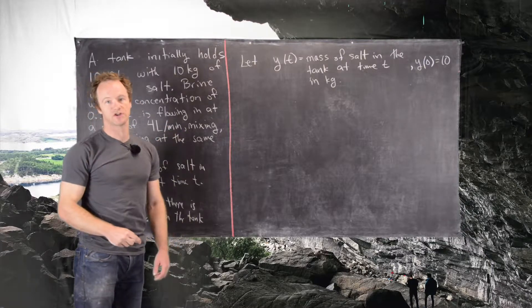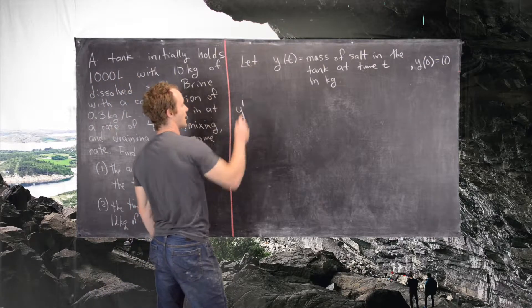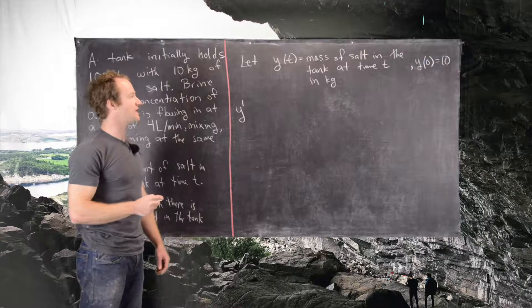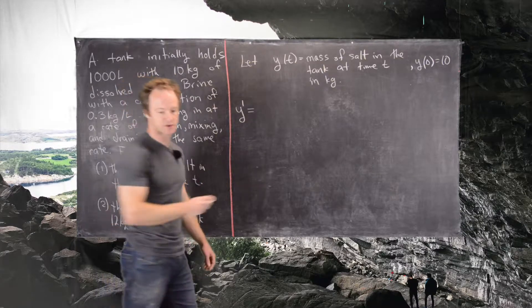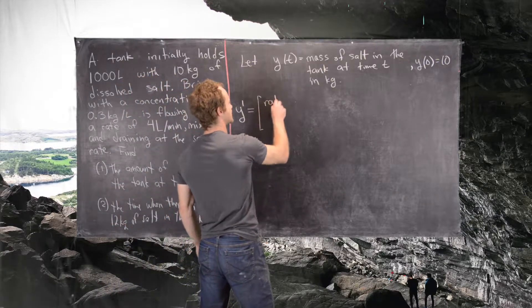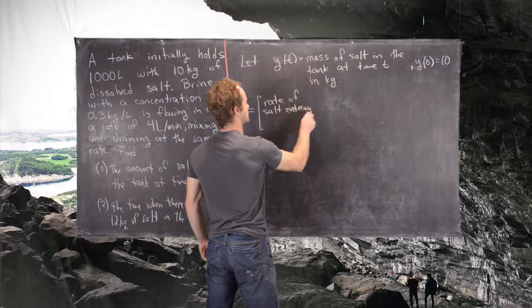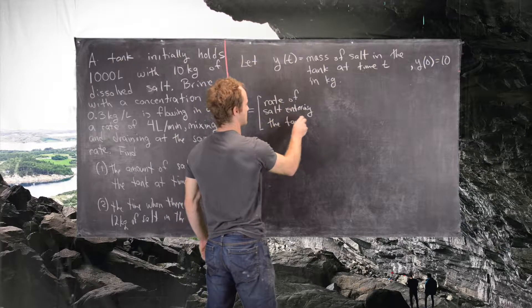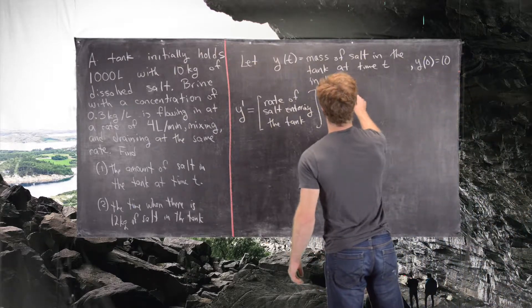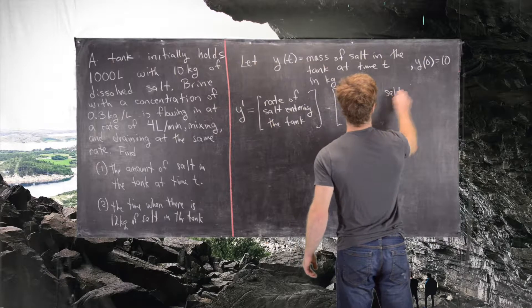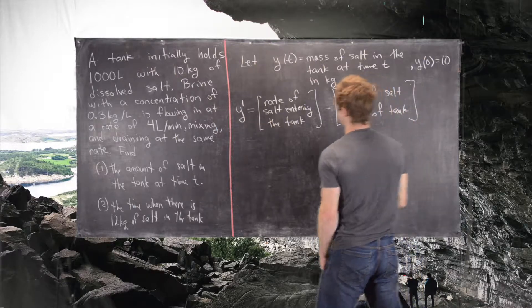Now we need to build a differential equation out of this function with this initial condition. Y prime represents the change in the mass of salt in the tank. There are two things governing this change: the rate of salt entering the tank minus the rate of salt exiting the tank.